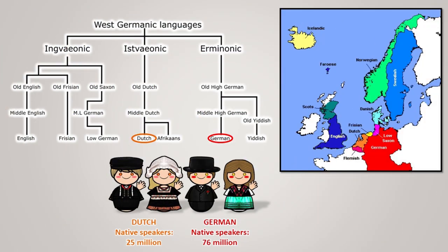German and Dutch belong to the West Germanic language family, a family that also includes English, Afrikaans, Yiddish, Frisian, amongst others.